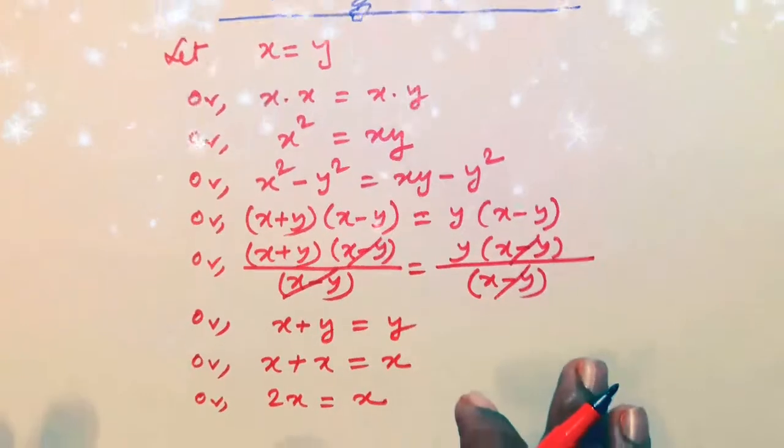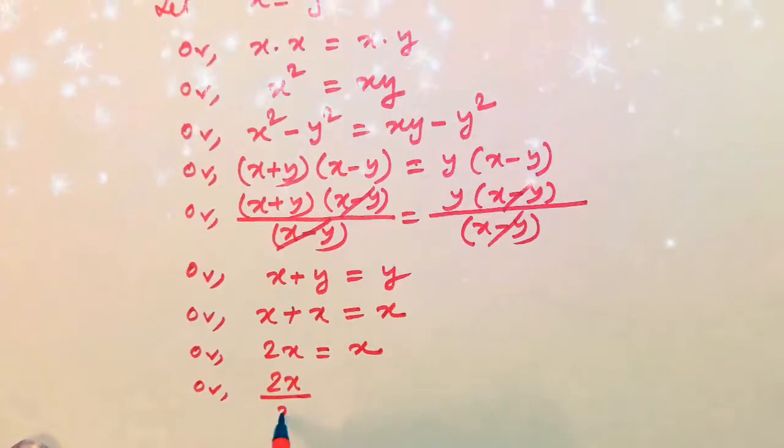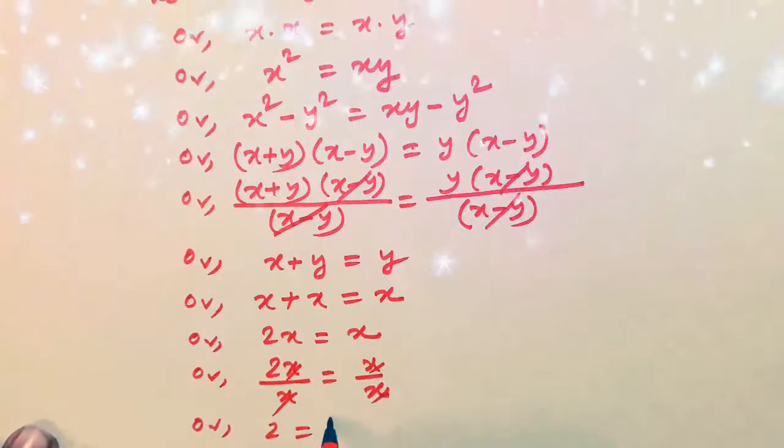Again, we divide both sides by x. 2x divided by x is equal to x divided by x. So cancelling, we get 2 is equal to 1.